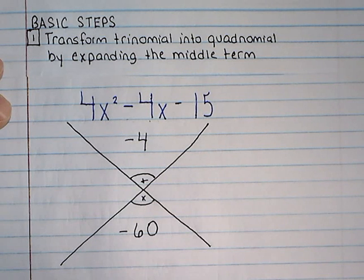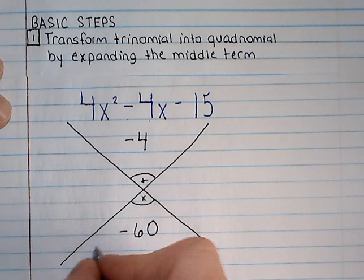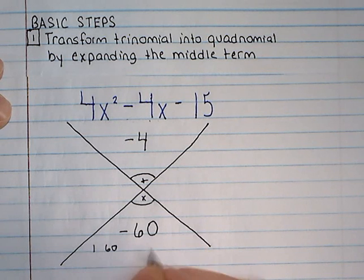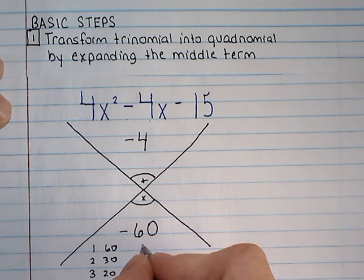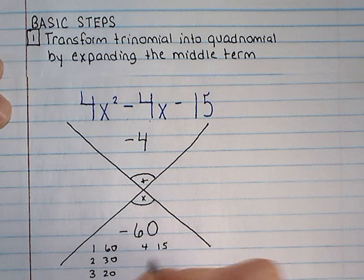So I'm going to go through my factor pairs for 60. 1 and 60, 2 and 30, 3 and 20, 4 and 15, 6 and 10, and I missed 5 and 12.